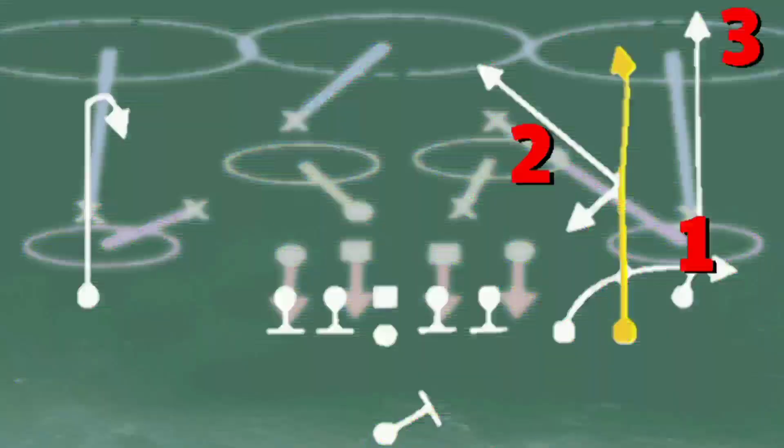First cover 3 Sky, you're going to notice that the curl flat defender is 9 times out of 10 going to try and jam, take away the seam read, giving you the flat route wide open. In many ways, this is the pick that the play was originally designed to create.